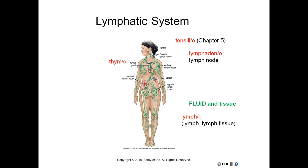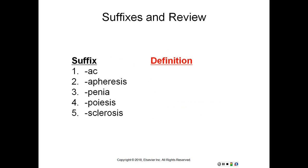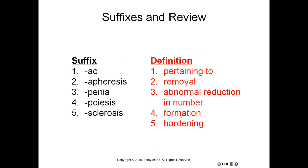Then we have two prefixes: brady means slow, pan means all or total. And then we have five suffixes: -ac means pertaining to, -apheresis means removal, -penia means abnormal reduction in number, -poiesis means formation, and -sclerosis means hardening.